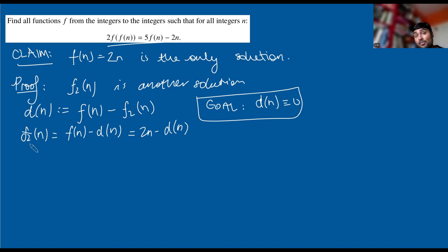If I rearrange this, I get f₂(n) = f(n) - d(n) = 2n - d(n). We're assuming that f₂(n) is a solution to this equation up here. So when I substitute f₂(n) with 2n - d(n), this equation will remain true. On the left-hand side, I have 2f₂(f₂(n)), and f₂(n) is 2n - d(n). Then I've got equals 5f₂(n), so 5(2n - d(n)) - 2n.